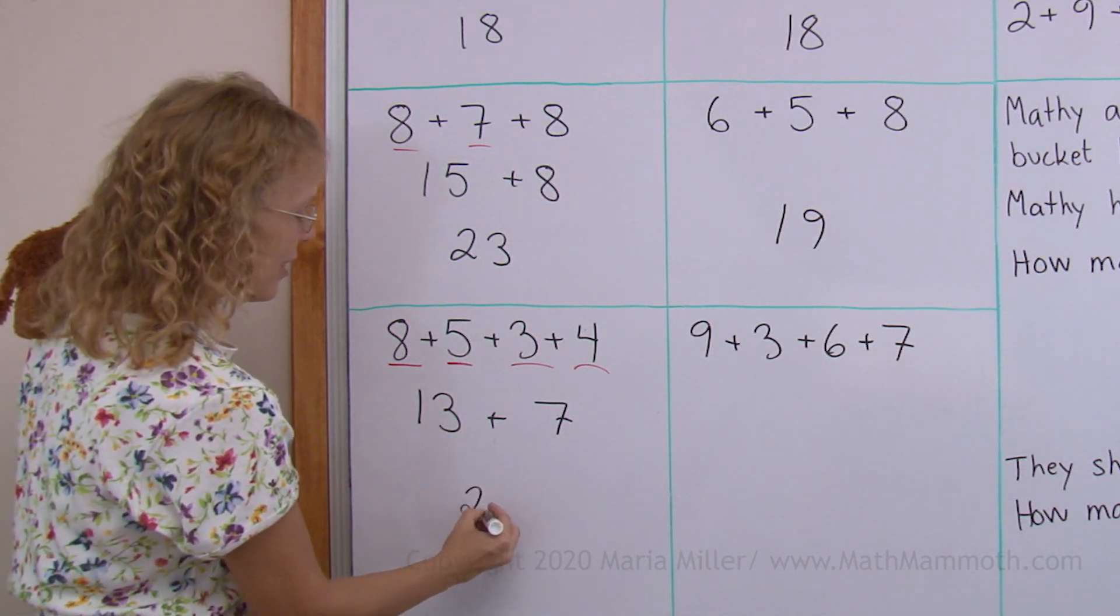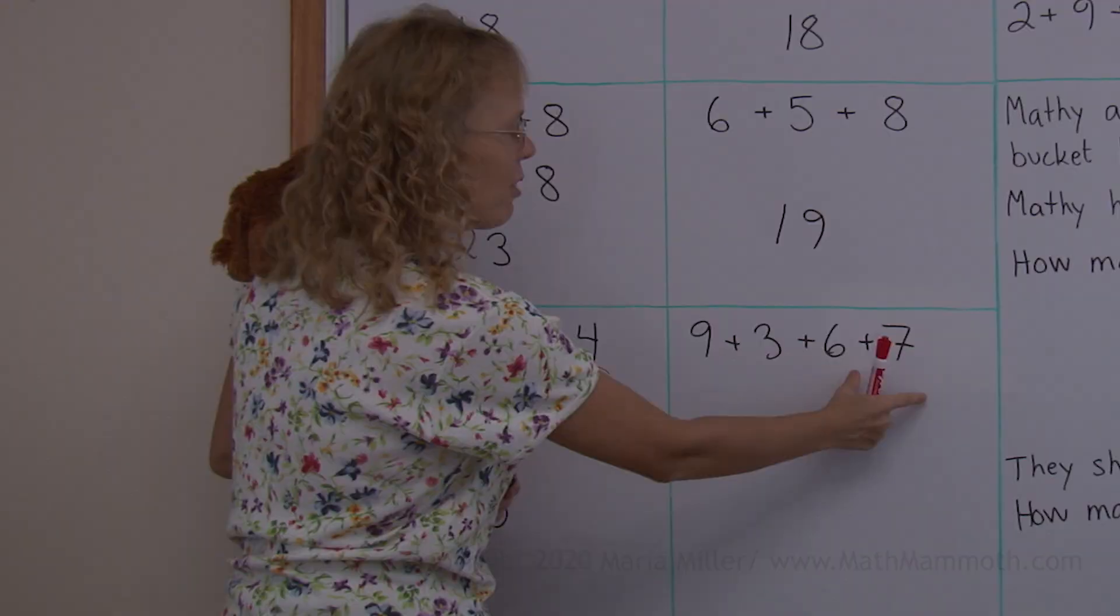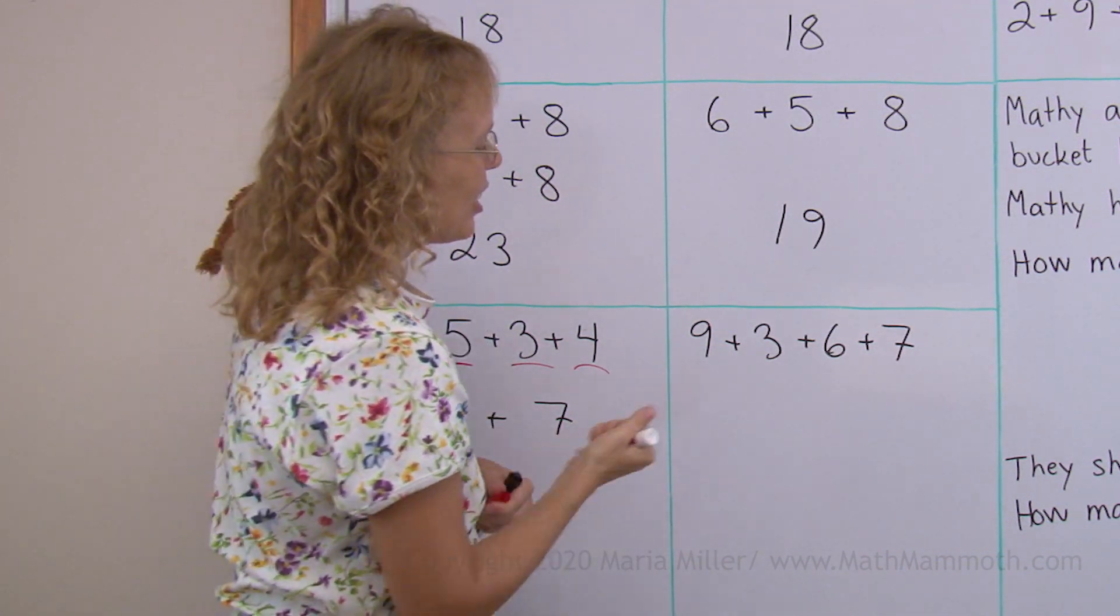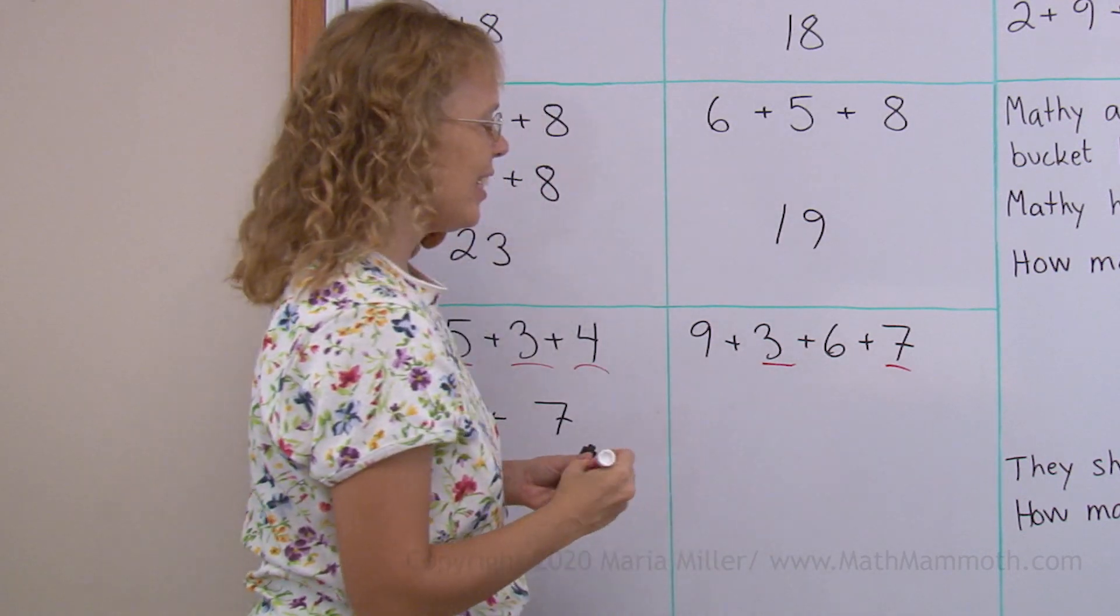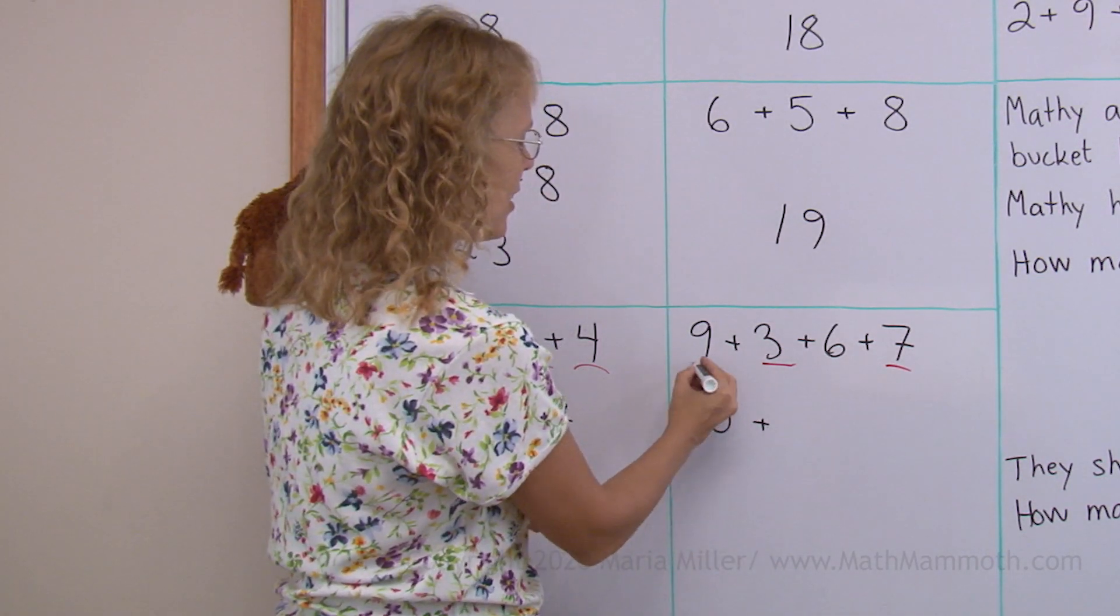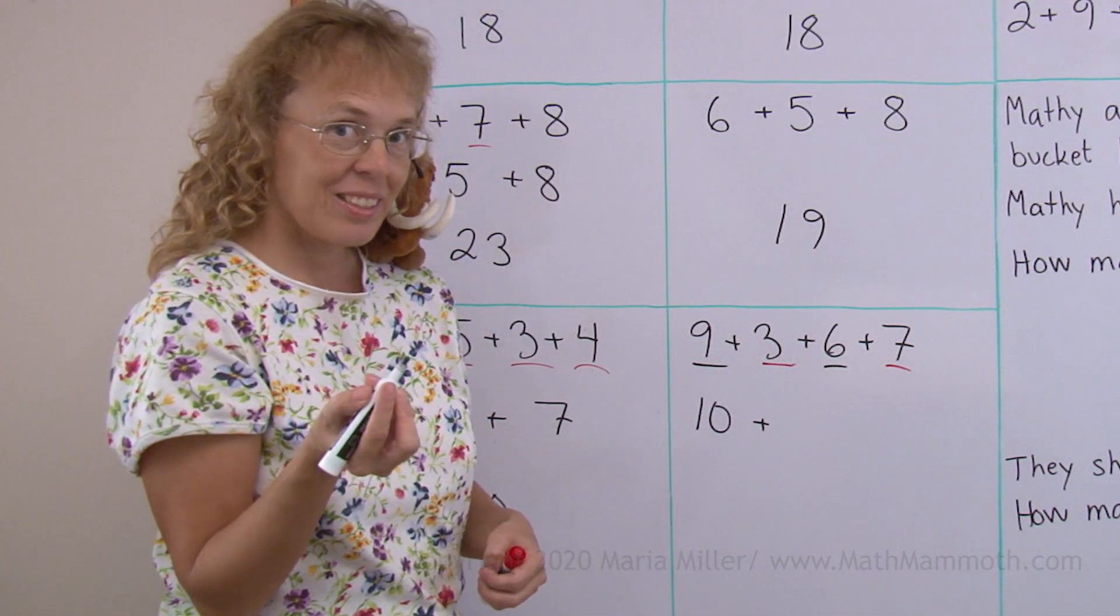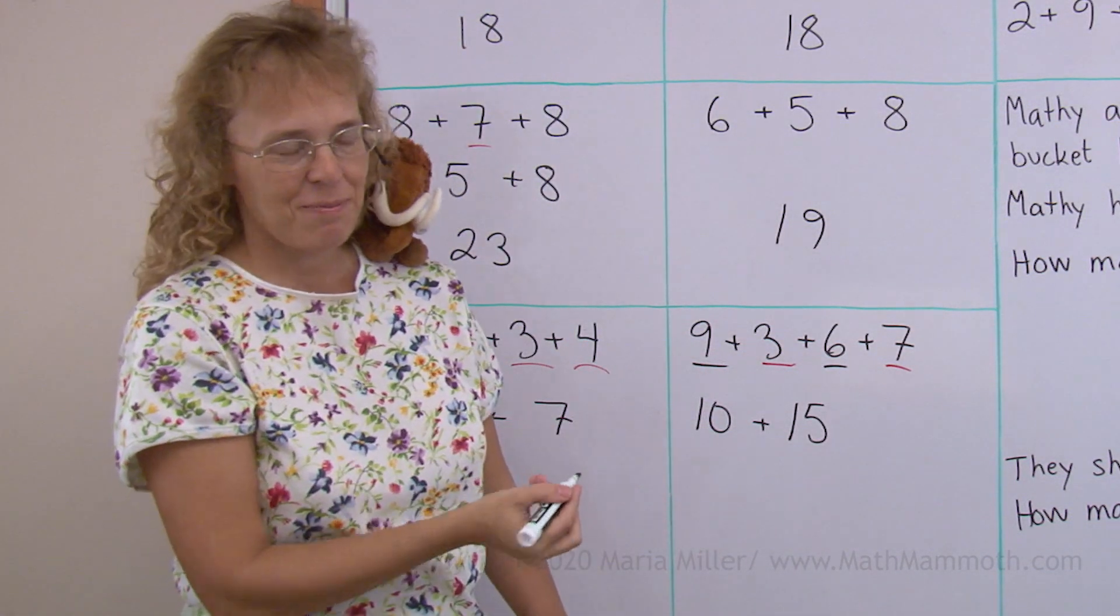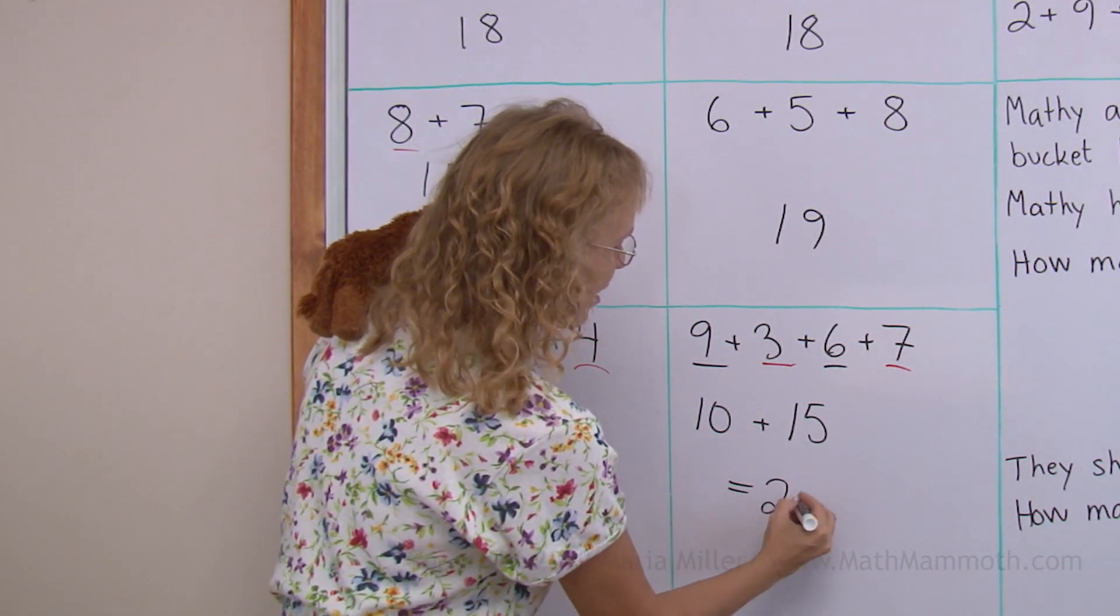Over here, I see 2 numbers that make 10. So those will be easy to add together. Those would make 10. And then these other 2, 9 and 6, makes 15. So you get 10 plus 15. And that is 25, right?